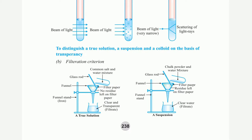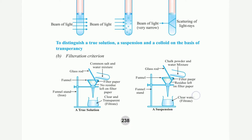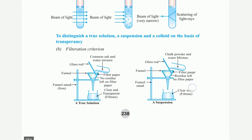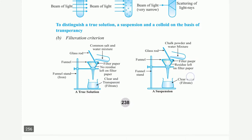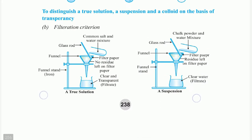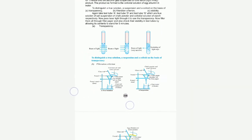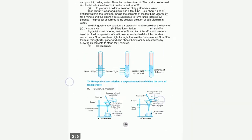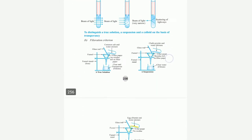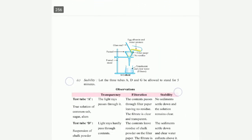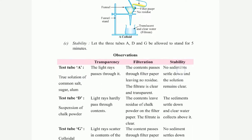Here is the filtration criterion. Materials include common salt, a water mixture, a glass rod, and a funnel. The properties covered are transpiration, filtration, and stability.